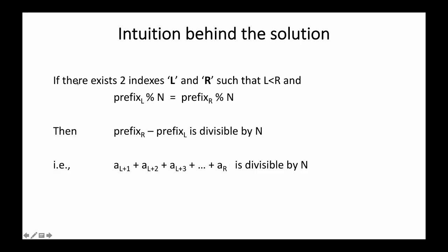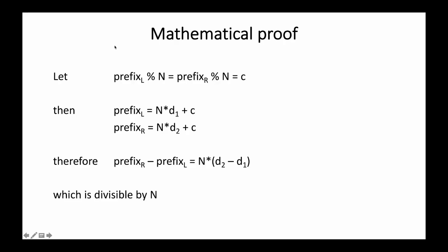I can give the mathematical proof for this statement. Assume prefix_l mod n equals prefix_r mod n equals c. Then we can write prefix_l as n·d1 + c and prefix_r as n·d2 + c. Subtracting the first from the second, we get prefix_r minus prefix_l equals n·d2 minus n·d1, and c cancels out. Taking n common gives n·(d2 - d1), meaning prefix_r minus prefix_l is divisible by n.